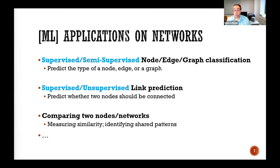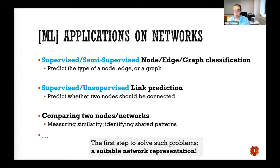An example of link prediction would be friend recommendation on a social network. You can also compare two networks by measuring their similarities and seeing if they share common patterns. In terms of an ML pipeline, the usual first step is some sort of traditional feature engineering, and the first step is usually to have a suitable network representation.